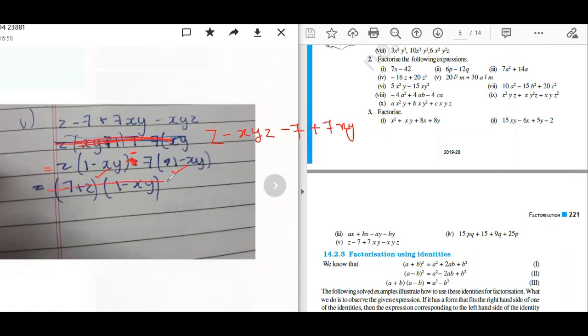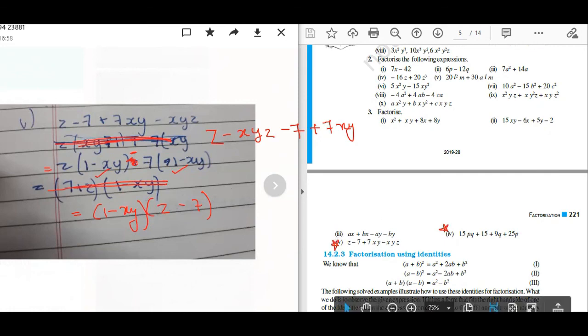So your answer is 1 minus XY common, Z minus 7 is the answer. Okay? Any doubt? Okay, sure. No sure. No. These two parts are very important. Similar to these will come in your example. Thank you.